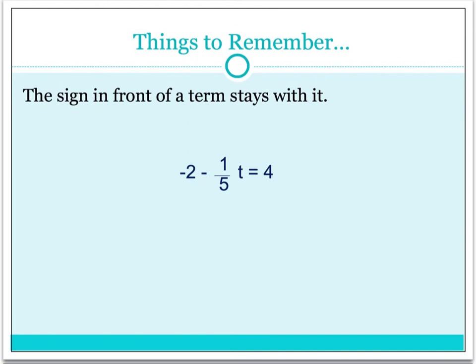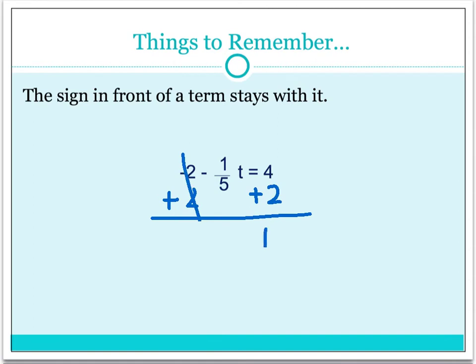We undo addition and subtraction first. Since the 1/5 is multiplied, we need to get rid of that negative 2. To do that, following the steps, we add 2 to both sides. Once that's done, we end up with a 6 on the right-hand side. A lot of people will say we just have 1/5 t on the left-hand side, but remember, that negative sign also has to continue to stay with the term. So we actually have negative 1/5 t is equal to 6.